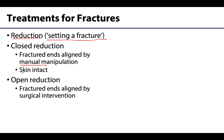This is called a closed reduction — the key here is manual manipulation without any incisions into the skin. If this is not possible, surgery is necessary, and this is referred to as an open reduction, where some type of hardware may play a role in getting the bones aligned in certain situations.